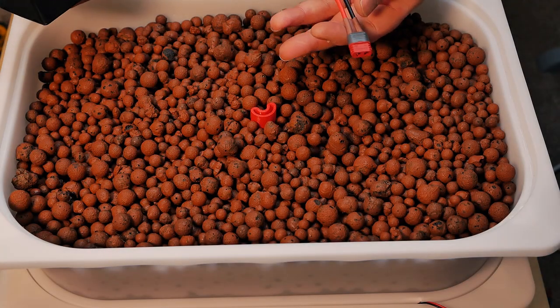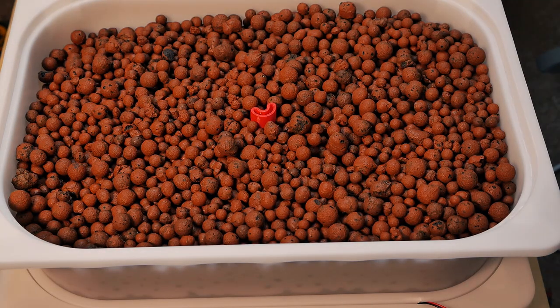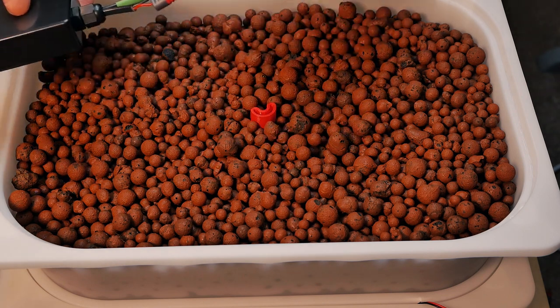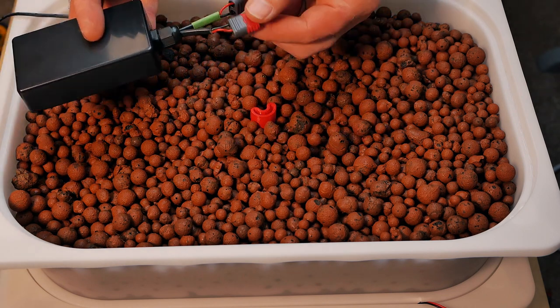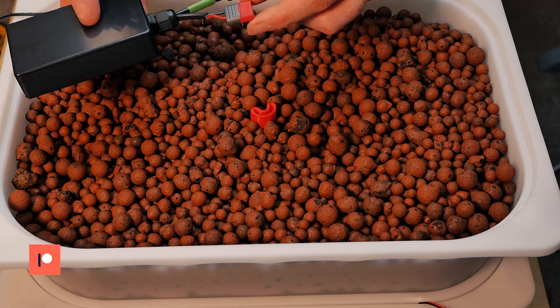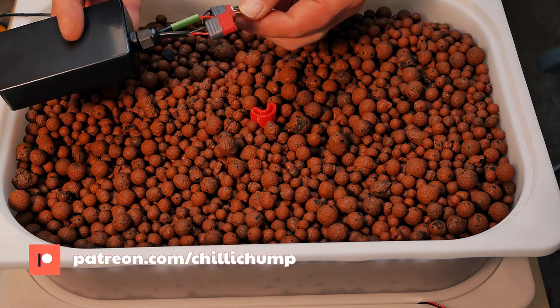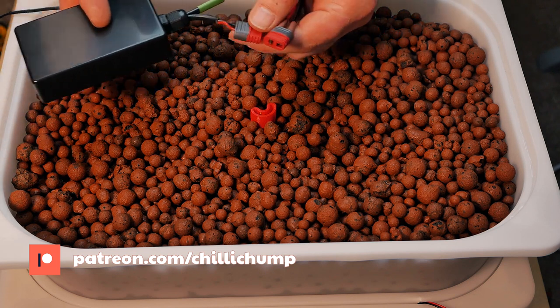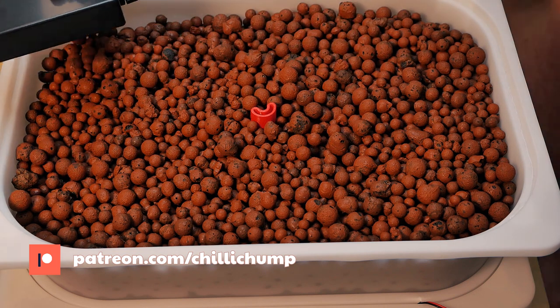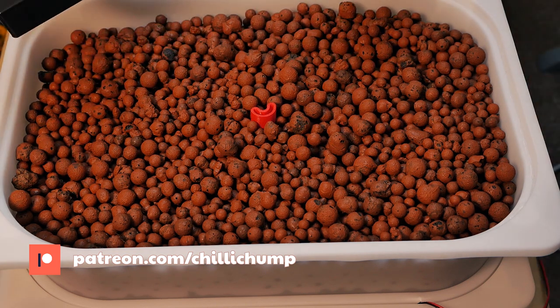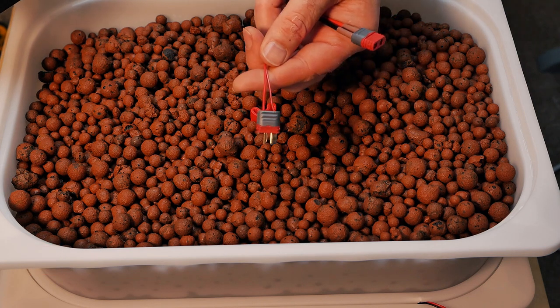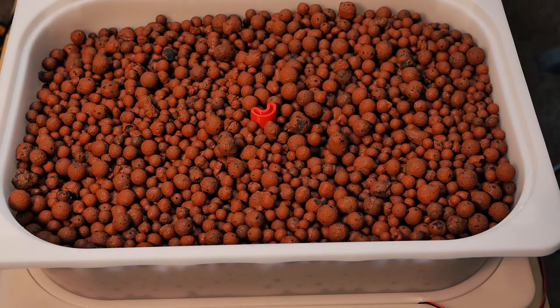For the moment I'm just running it off a 12 volt DC adapter, just like that with these plugs. This is sort of the system I'm using in the greenhouse with my solar panels and my batteries. I'm using Dean's connectors, so I just thought I'd be consistent and keep it like that. I've also put a Dean's connector on the end of the pump. So let's plug it all in.